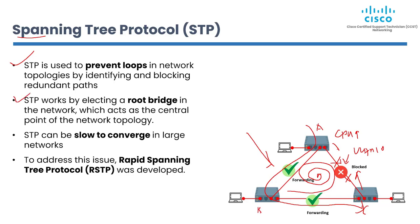STP works by electing a root bridge in the network, which acts as a central point of the network topology. Each switch determines the shortest path to the root bridge and uses that path to forward data packets. In the event of a link failure, STP reconfigures the network topology to ensure there is only one active path. For example, if a link goes down, the previously blocked port will transition to forwarding so traffic can take the alternate path. However, STP can be slow to converge in large networks, resulting in network downtime and decreased performance. To address this slow convergence, Rapid Spanning Tree Protocol (RSTP) was developed.